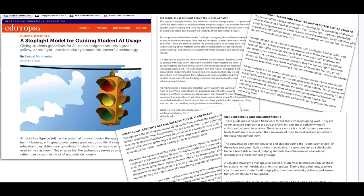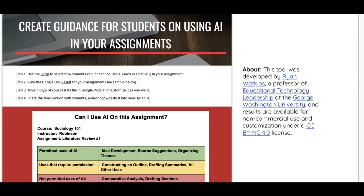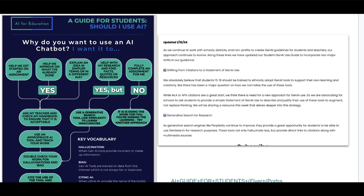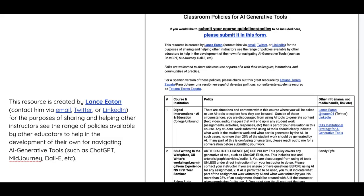Edutopia talked about the stoplight model, and Ryan Watkins created a Google Form to help people come up with a red/yellow/green chart — you fill out the form and the output looks like a stoplight guide: 'Can I use AI on this assignment?' AI for Education created a flowchart of when to use and when not to use AI depending on what you want to do. Lance Eaton began collecting classroom policies for AI tools — some K-12, most at the university level — searchable by subject like business, English, or social work. It was a crowdsourced effort.